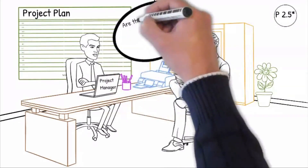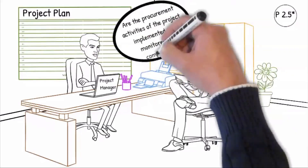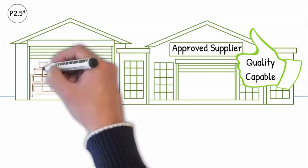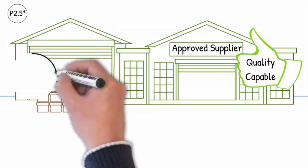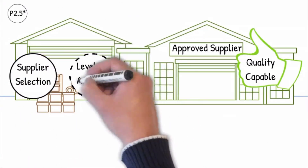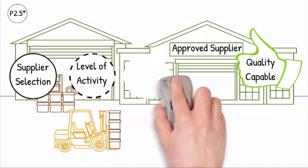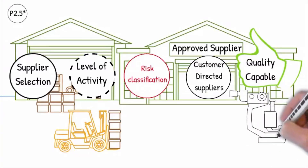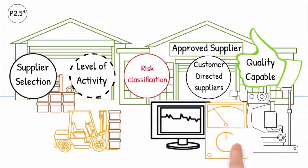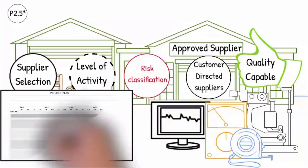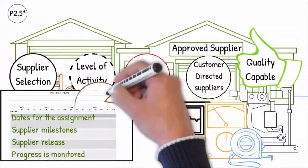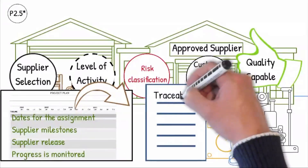Question P2.5: Are the procurement activities of the project implemented and monitored for compliance? The procurement activities ensure that only approved and quality-capable suppliers are used in production. This is included in the Supplier Selection Award criteria for the volumes and delivery target date. The level of activity depends on the risk classification of the procured scope of the suppliers. The activities also include customer-required directed suppliers, and must ensure that only approved and quality-capable suppliers — including equipment suppliers — are used in production. Dates for the assignment, supplier milestones and release have been laid down in the plan and coordinated with the overall schedule, and the progress is monitored. The appointment of suppliers must be traceable through appropriate documentation.